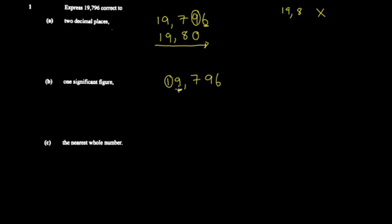Nine is greater than five, so we round up. The 1 rounds up to 2, giving us 20. The zero here is insignificant, so 20 is the one significant figure equivalent of the number.